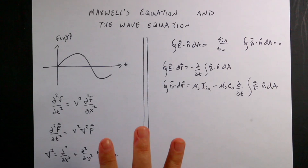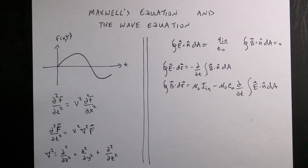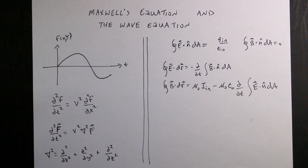I'm going to show you how Maxwell's equations show that there is such a thing as an electromagnetic wave. We have to start with two parts here, and there's a whole bunch of background stuff. I'll put the links to everything relevant down below.